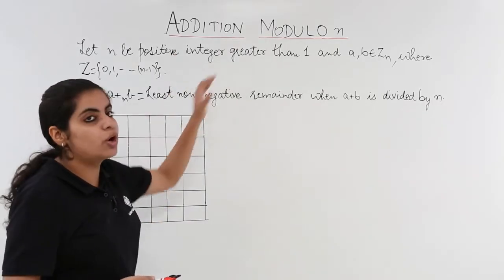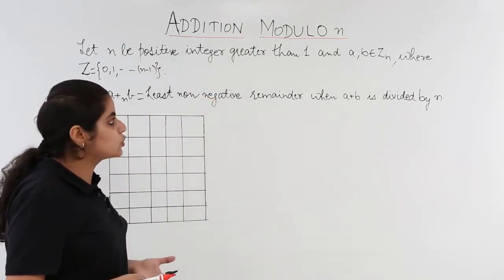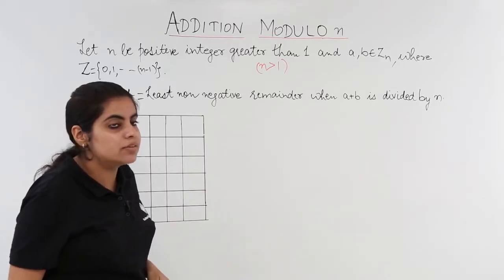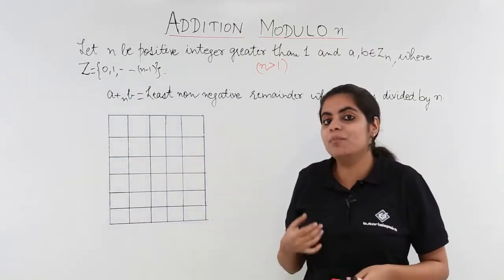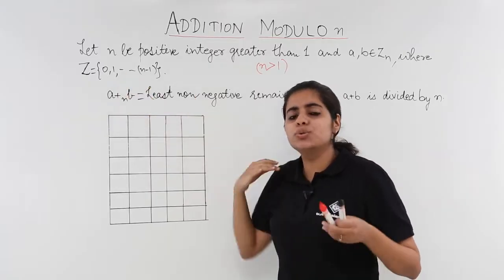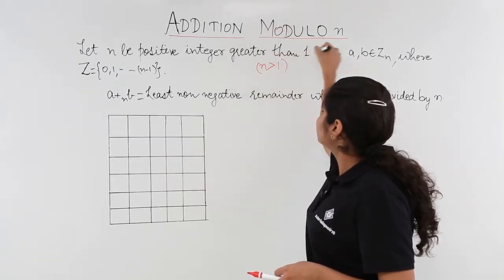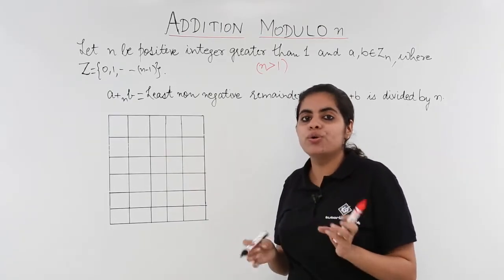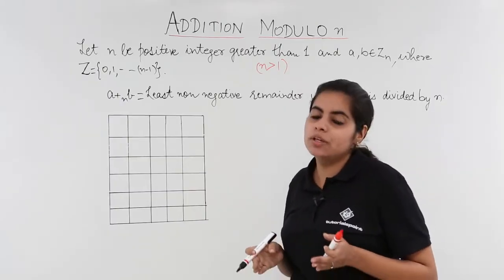Let's read the definition of addition modulo n. Let n be a positive integer, with the restriction that n is greater than 1. And a and b belong to Zn, where Z is a set comprising n elements ranging from 0, 1, 2, 3 and so on till n-1. Now, addition modulo n — what do we mean by modulo n? Modulo is denoted by congruence modulo, and this term is very common in mathematics, especially when you talk about binary operations.